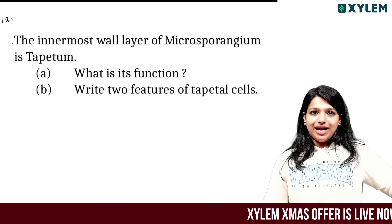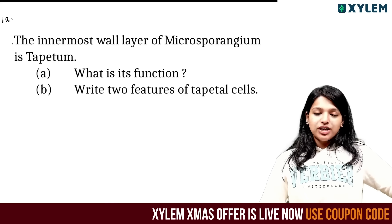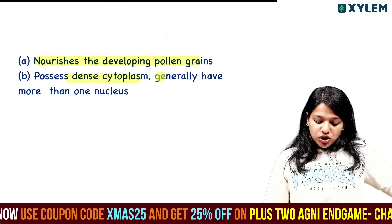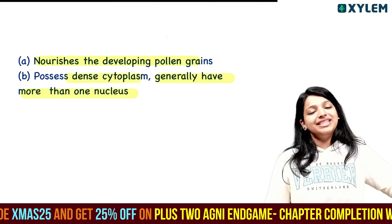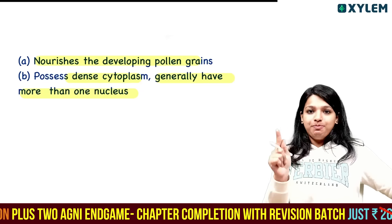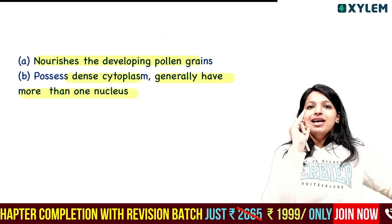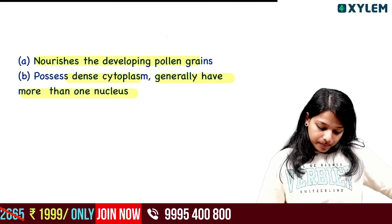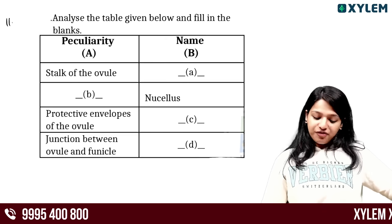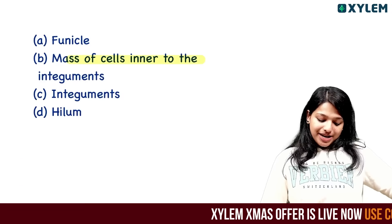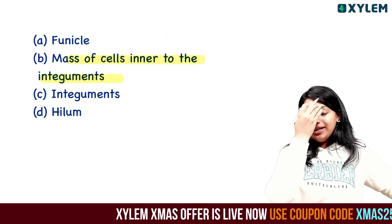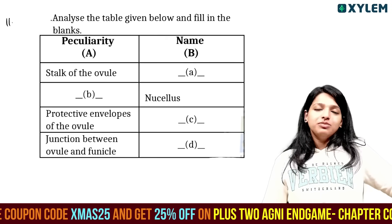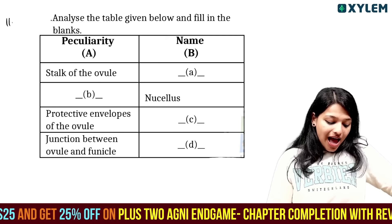The innermost layer of microsporangium is tapetum. Write two features of tapetal cells: they provide nourishment and nutrients; they possess dense cytoplasm and generally have more than one nucleus. The stalk of the ovule is the funicle. The protective envelope of the ovule is formed by integuments.